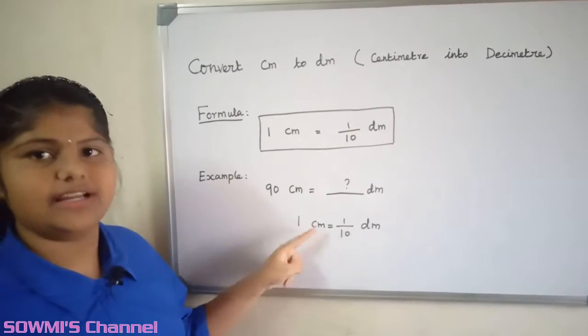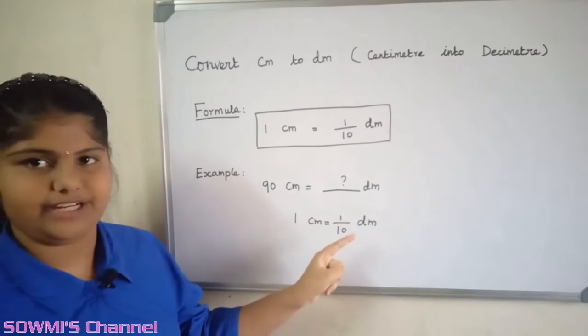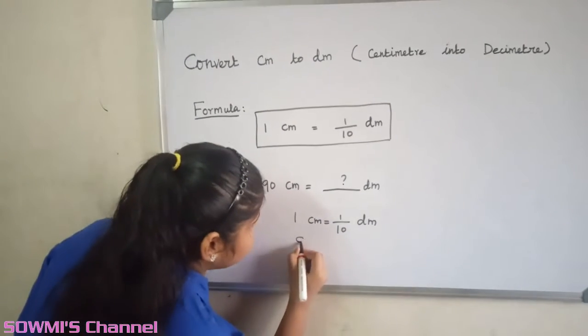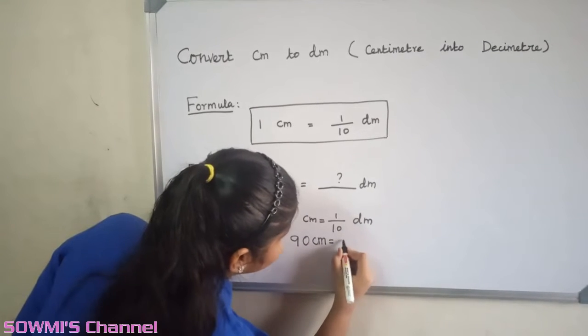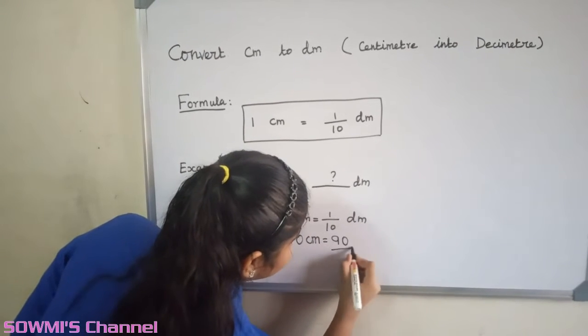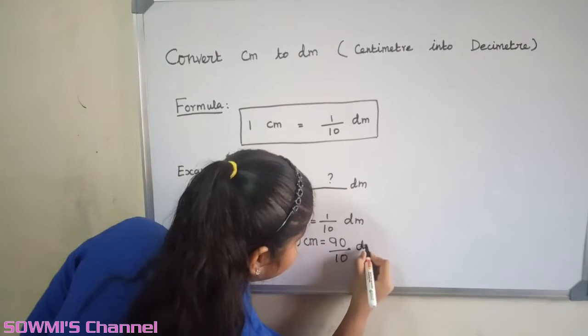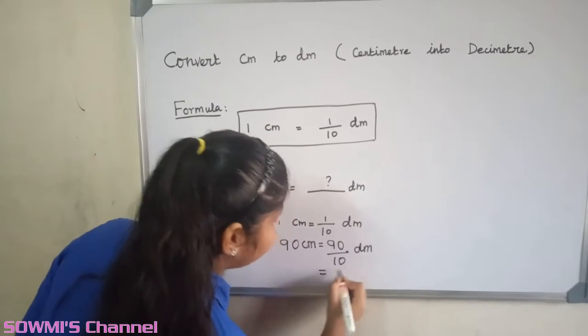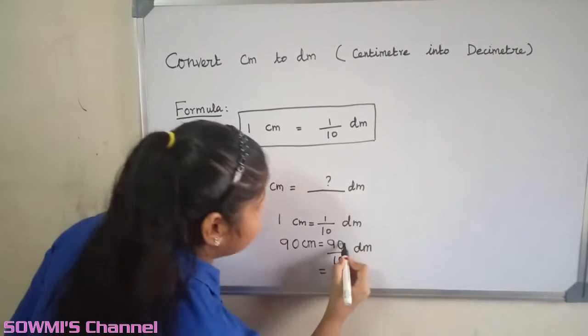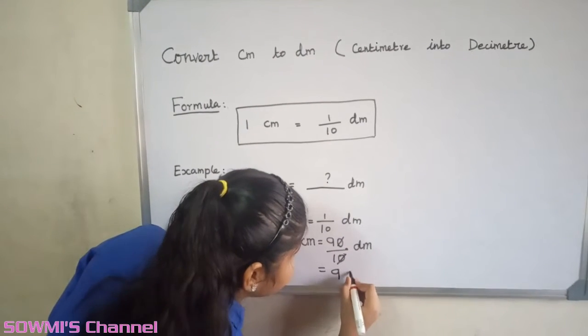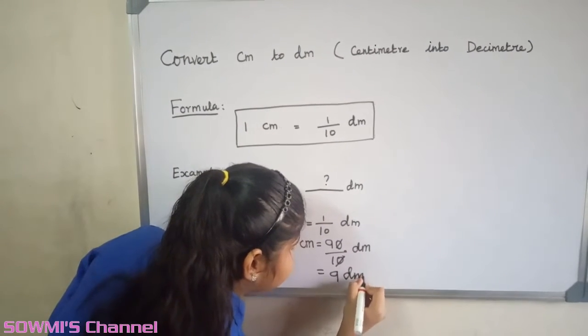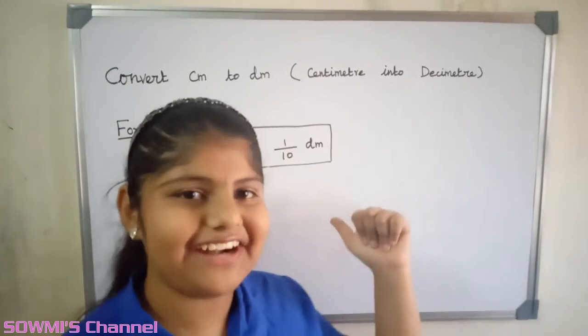1 centimeter is equal to 1/10 decimeter, so 90 centimeters is equal to 90/10 decimeters. Here 0 and 0 gets cancelled, so the answer is 9 decimeters. Let us see another example.